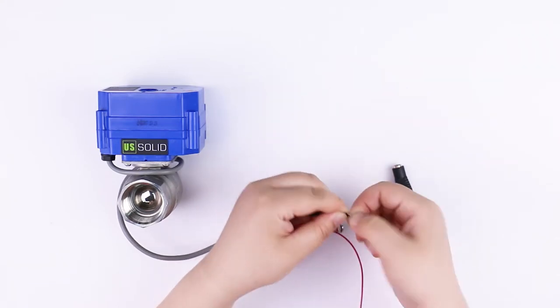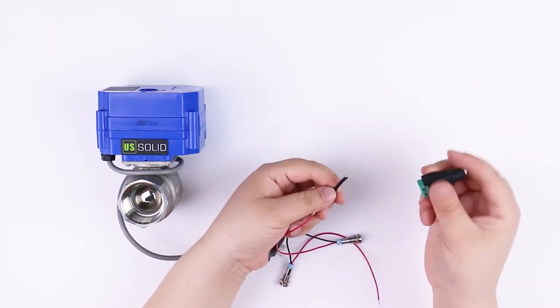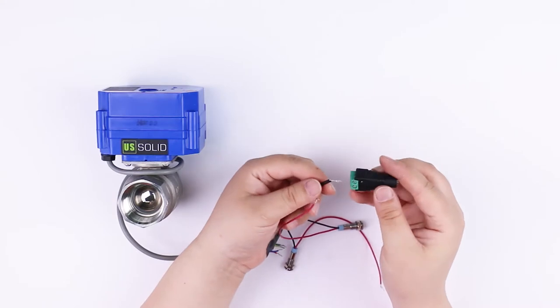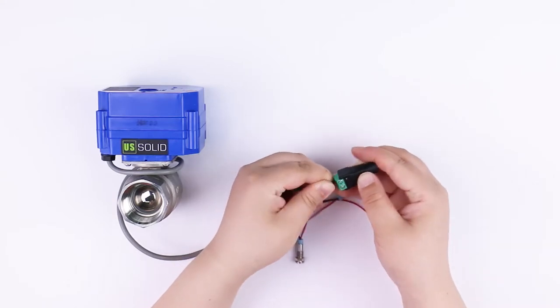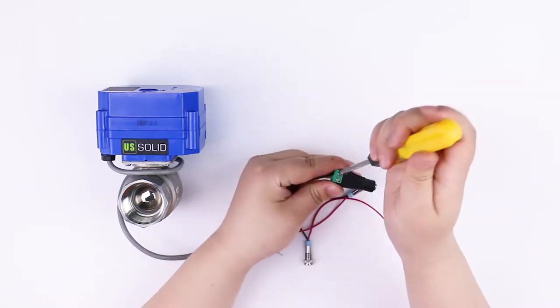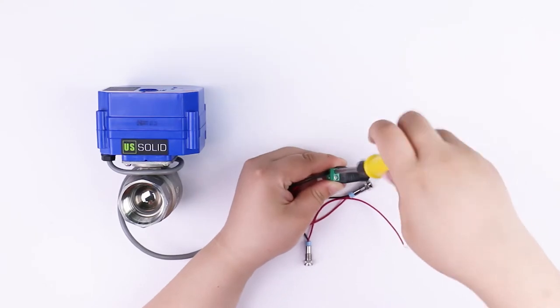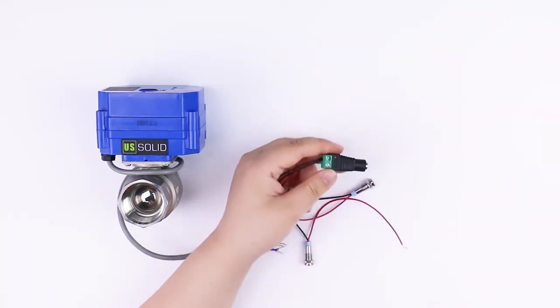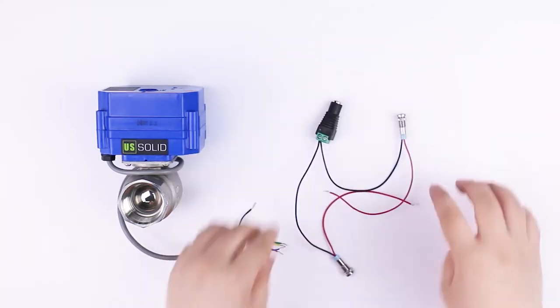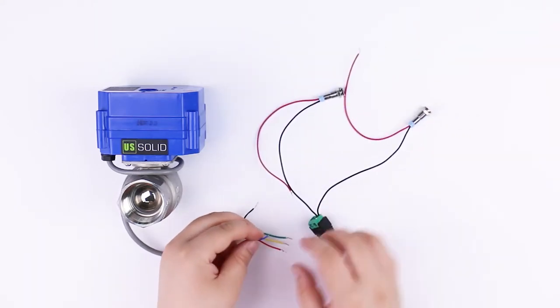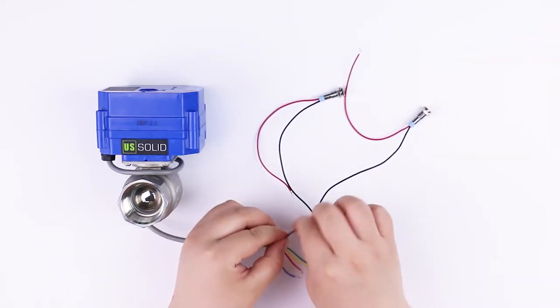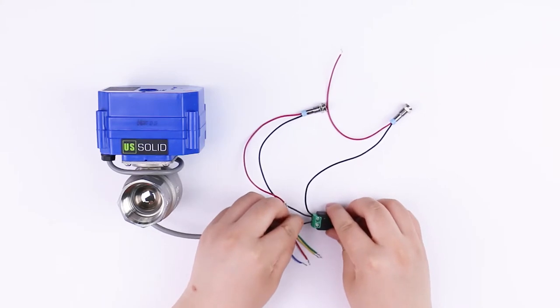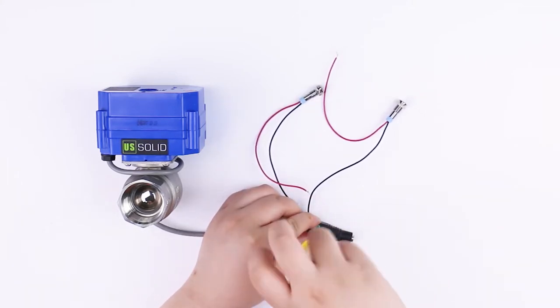One side of the two lights should be connected to the positive power of the DC plug, another side will be connected to the red or green wire of the valve. Black wire from the valve is connected to the negative power.